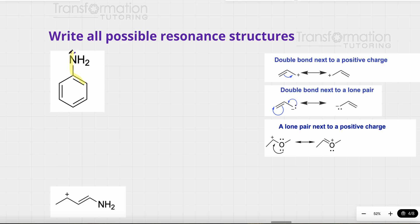I see a lone pair next to a double bond. I draw one arrow from the lone pair to create a double bond here. But if I were done, this carbon would have too many bonds — it already has eight electrons, and adding two more would give it ten electrons, which is impossible. Row two elements should not have more than an octet. That's why a second arrow is needed: we take the electrons that were used in the double bond and put them on the adjacent carbon, where they will become a lone pair.